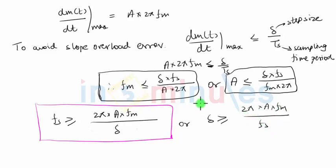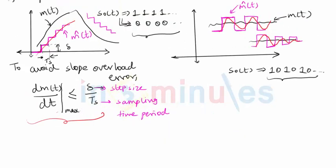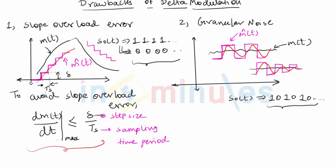To avoid slope overload, my step size has to be greater than or equal to the right hand side value. Now why we may not prefer this second design aspect - because if I want to keep the large step size and have a constant sampling frequency, then the problem is with large value of step size we will increase the granular noise also, because the requirement for less granular noise is that the step size should be very small.